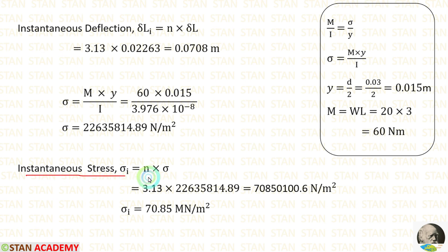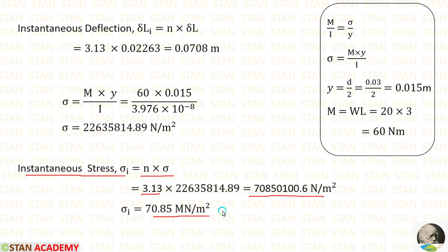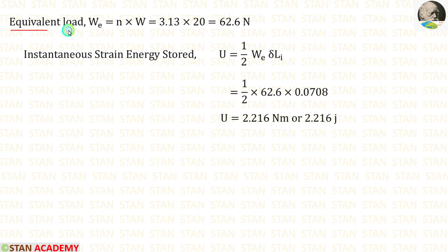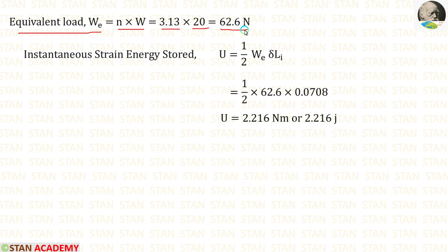Instantaneous stress sigma I is equal to N into sigma. N is 3.13, and applying the values, we get the result. Dividing by 10 power 6 gives the answer in mega newton per meter square. So sigma I equals 70.85 mega newton per meter square. Equivalent load WE equals N into W. N is 3.13 and W is 20 Newton, giving WE equal to 62.6 Newton.